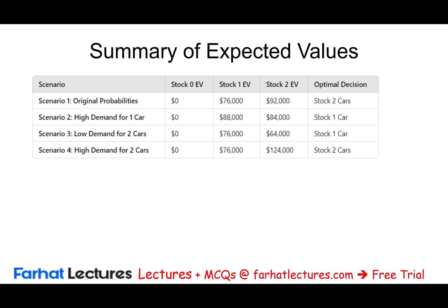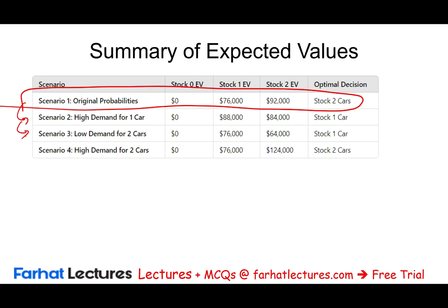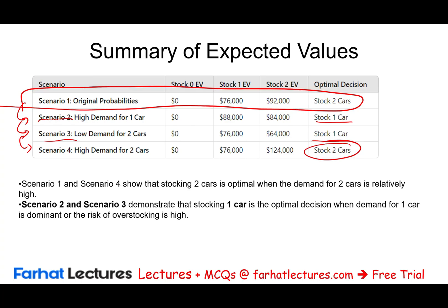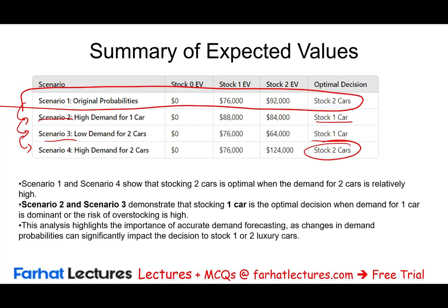Looking at all four scenarios: the baseline had two cars as the best option; scenario two and three favor stocking one car; scenario four, when everything looks good, favors stocking two luxury cars. Each scenario depends on someone's risk tolerance and their expectations about what will happen. This is why we live in an uncertain environment — that's why we do these scenarios and take our best guess.